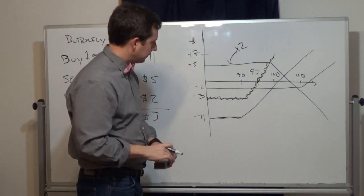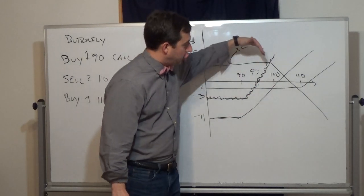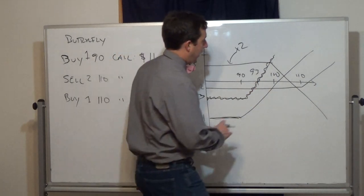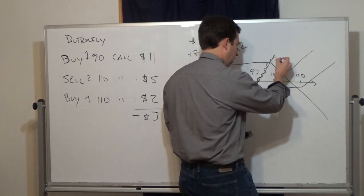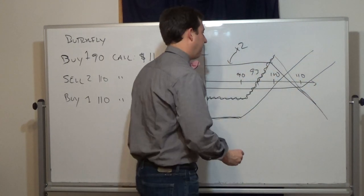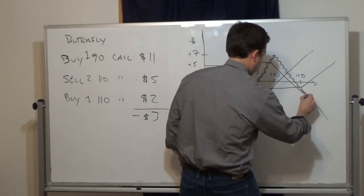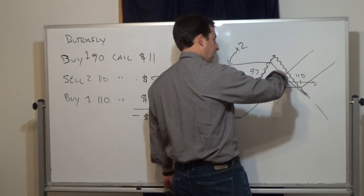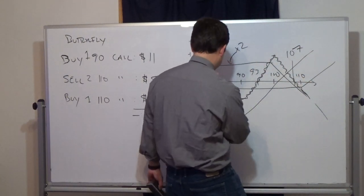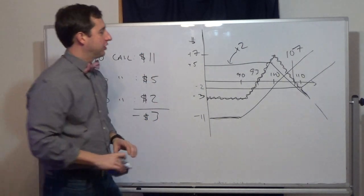At $100, we're long one call that's paying but also short two calls that are now paying — net we're short one call — so the P&L declines with a slope of negative one. We have +$7 at $100, so the break-even on the downside is $107. Once we hit $110, we're long two calls paying and short two calls paying, so it flattens out.